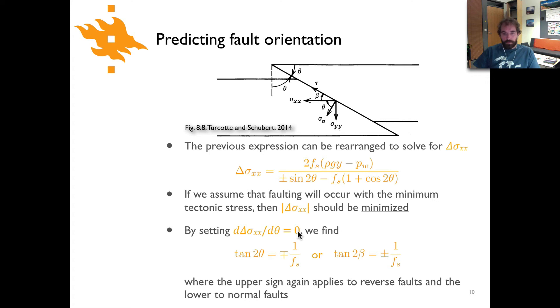And so that's the idea is that we take this derivative with respect to theta and set it equal to zero. And then you come out with the simple relationships that the tangent of two theta is equal to minus over plus one over the coefficient of friction or tangent of two beta is equal to plus or minus one over the coefficient of friction. And again upper symbols for reverse faults lower is for normal faults.